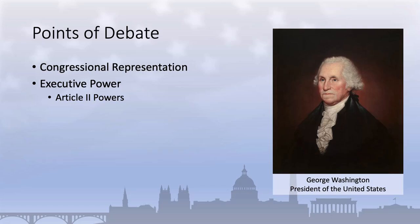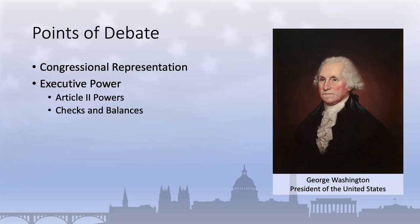But importantly, these powers are all still limited through the system of checks and balances. Thus, while the President can conduct foreign affairs, the Senate must ratify any treaties negotiated. While the President can veto legislation, Congress can override that veto by a two-thirds majority vote. In other words, while expanding the power of the executive, the founders simultaneously sought ways to circumscribe the exercise of that power.